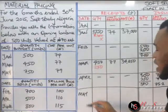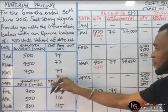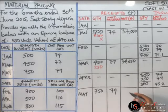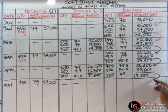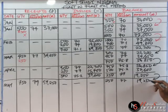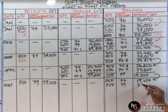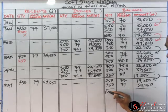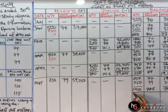Move over to May. For May, the transaction says quantity bought 750 at 79. So 750 times 79 gives us 59,250. We bring down the previous balance: 250, 77, and 19,250. Then we bring over the new receipt: 750, 79, and 59,250. Adding the quantities: 1,000. Adding the amounts: 78,500. 78,500 divided by 1,000 gives us 78.5. We are done with May.